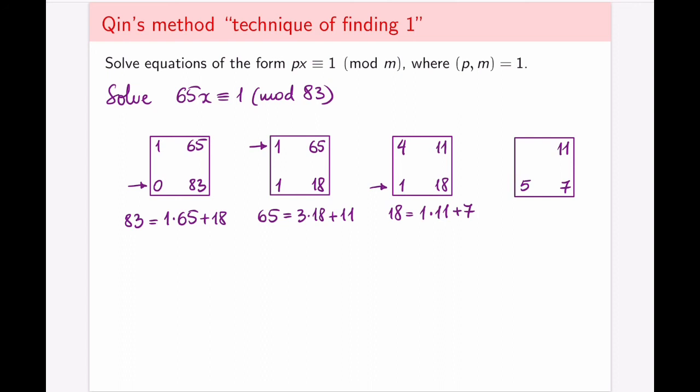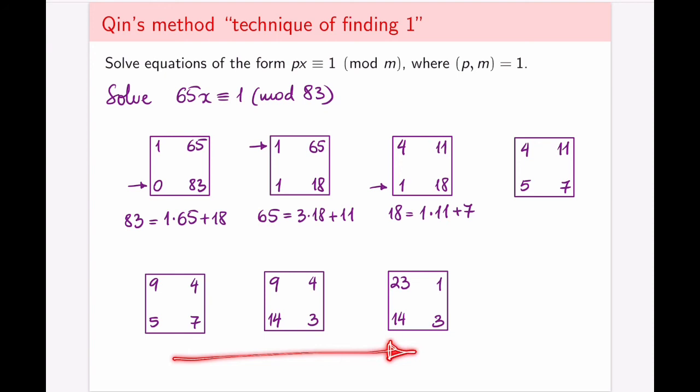And we're going to carry on until we get number one in the top right. That's why it's called the technique of finding one. We're going to follow through with this until we get one in this corner here. Try it out for yourself. And so pause the video, try it out, and then come back to see if you get the same squares as I do. So these are my other three squares. And you notice that now I get one in the right top corner, which means I am done.